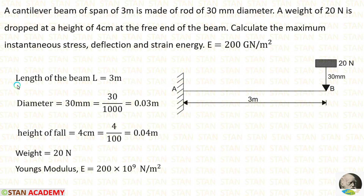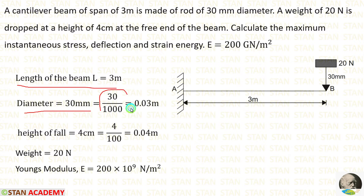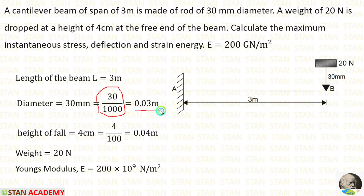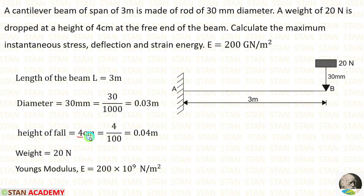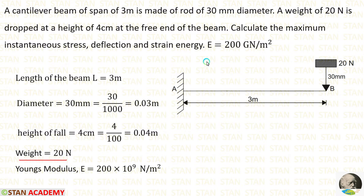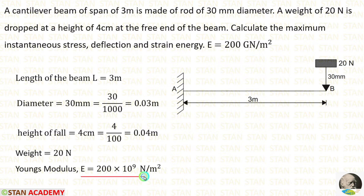From the question, let us note the given data. Length of the beam L is equal to 3 meter. Diameter is given in millimeter, so we convert to meter: 30 divided by 1000. Height of the fall is 4 centimeter, converted to meter: 4 by 100. Weight is given as 20 Newton. Young's modulus is given as 200 giga newton per meter square, and since 1 giga equals 10 power 9, E is equal to 200 into 10 power 9 newton per meter square.